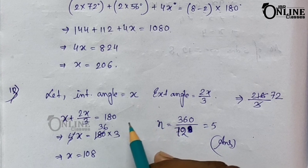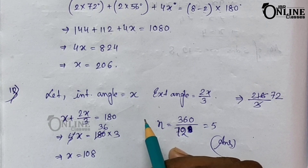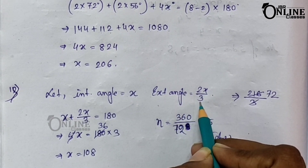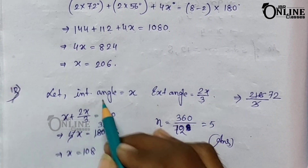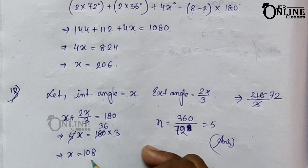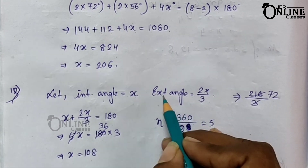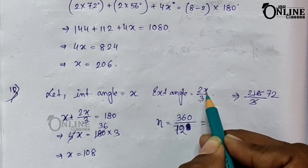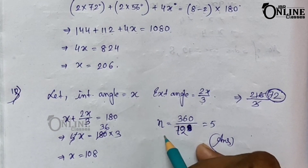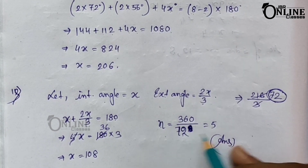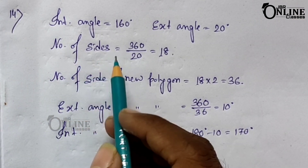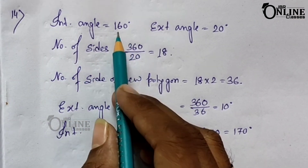Problem number thirteen: each exterior angle of a regular polygon is two-thirds of its interior angle. Find the number of sides. Let the interior angle be x, then the exterior angle = 2x/3. Since x + 2x/3 = 180°, solving gives x = 108°. The exterior angle = 72°, and the number of sides = 360° ÷ 72° = 5.